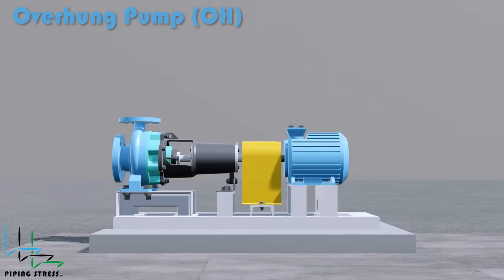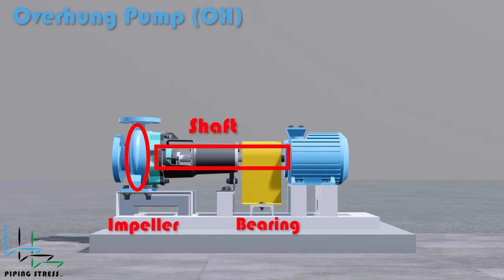Overhung Pump: An overhung pump is so named because the impeller is mounted on the end of the shaft that extends beyond the pump's bearings, resulting in the impeller overhanging the bearings.